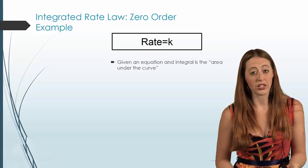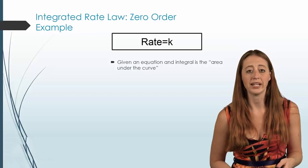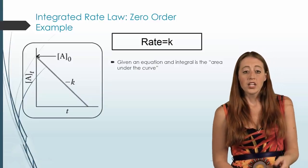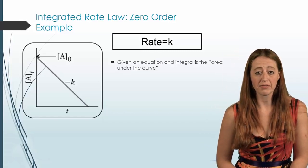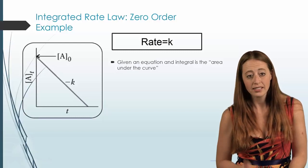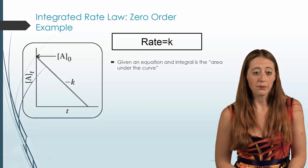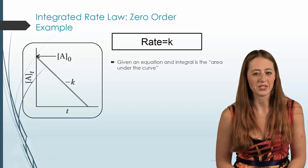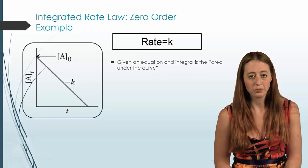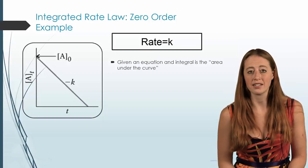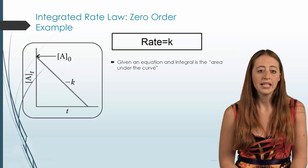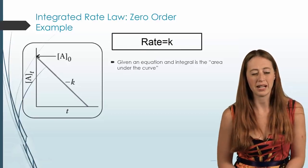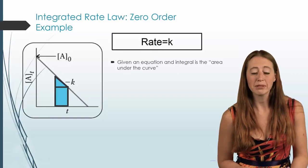Now let's look at what an integrated rate law really means — it's the simplest of the three. If you think about it: you have a specific rate equal to k, and as time keeps going the concentration goes down. We just have a straight line with a slope of negative k. If you think about this rate law as an equation of a line, that makes sense. If we were to integrate this — even if you have no calculus, we can think about it as being the area under the curve.